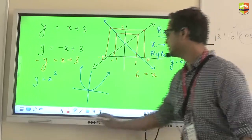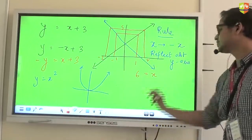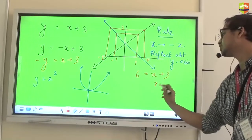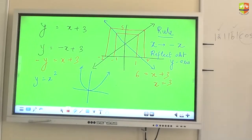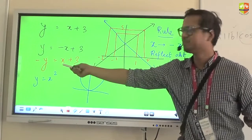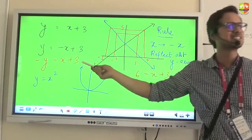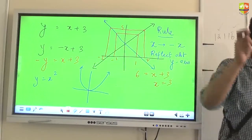Y equal to 6 means X should be how much? X should be 3. Now for the same 3 value over here, Y will now become negative 6. Understood the point?